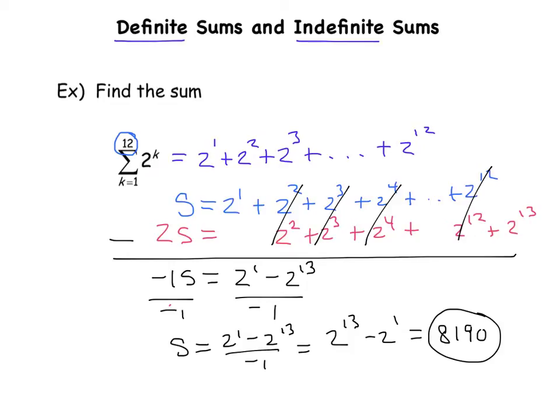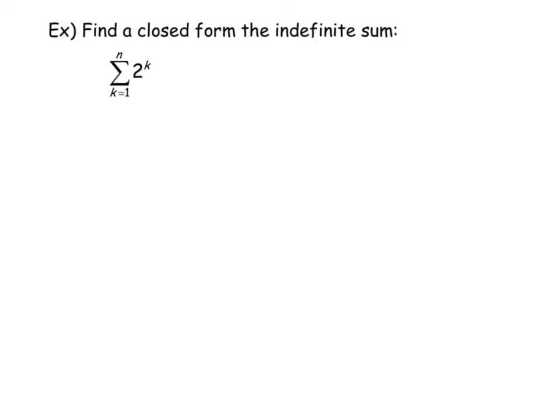Compare that to the one on the next page. This says find a closed form, and there's a little typo there, it should say for the indefinite sum. So it's an indefinite sum because I'm not adding up a finite number of numbers. I'm adding up n numbers where n is a variable.